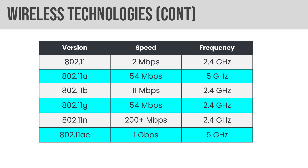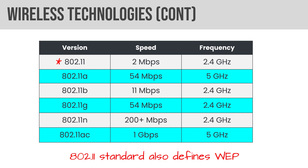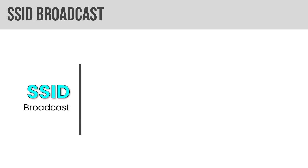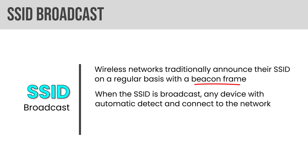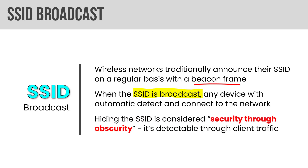Here's the table of wireless technologies — wireless standards and their connection speeds. The 802.11 standard also defines WEP, which stands for Wired Equivalent Privacy — an early form of wireless network security not seen much anymore. Wireless networks traditionally announce their SSID on a regular basis with a beacon frame. When the SSID is broadcast, any device with automatic detect-and-connect can try to connect. Hiding the SSID is considered security through obscurity — it's detectable through client traffic. SSID stands for Service Set Identifier.